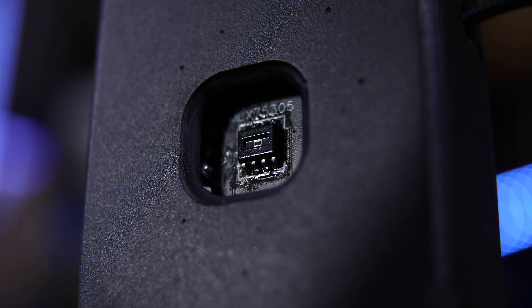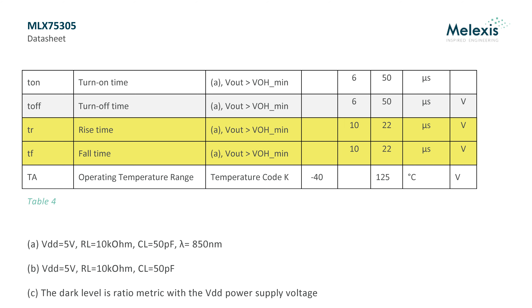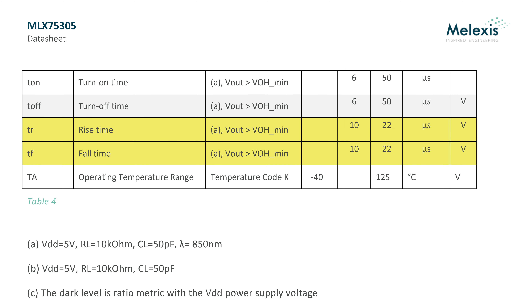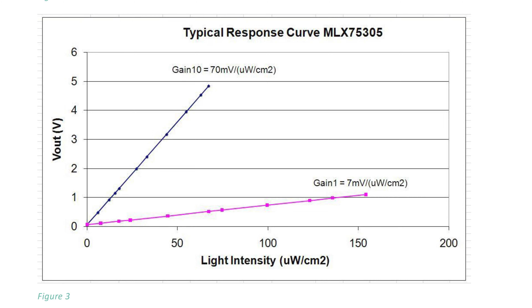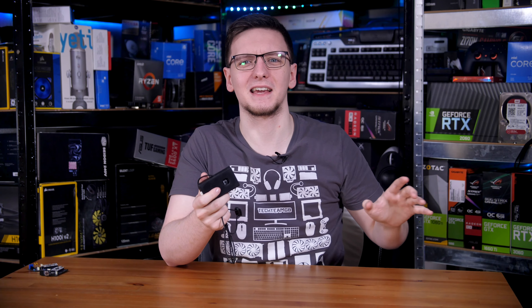The actual sensor itself is a Melexis MLX75305 — a light-to-voltage sensor which takes power in, then varies what voltage it outputs based on how much light is hitting the tiny sensor itself. It's a great fit for this task, as it's pretty decently fast at responding to changes in light level — between 10 and 22 microseconds. It's also impressively linear, meaning that the more light you shine in, the higher the output, and the graph of that change is a nice straight line. And finally, it's also pretty sensitive — it can detect incredibly small changes in light level.